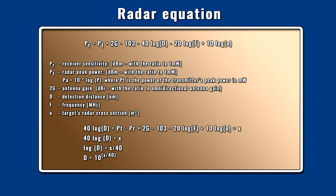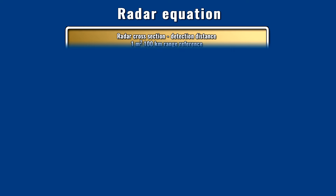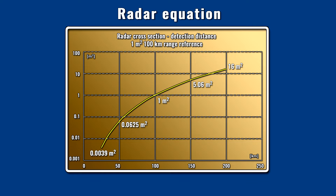The equation shows that the relationship between the radar cross-section and the detection distance is not linear. Doubling or halving of the detection range is proportional to the fourth power of the change in the radar cross-section. Therefore, if the goal is to halve the detection distance of an airplane with a radar cross-section of 1 square meter, then the reflecting surface must be reduced to 0.5 to the fourth power. This is approximately 6% of the original radar cross-section, more exactly 0.0625 square meters. If the goal is further halving the detection range, then 6% of this must be achieved, which is 0.039 square meters.